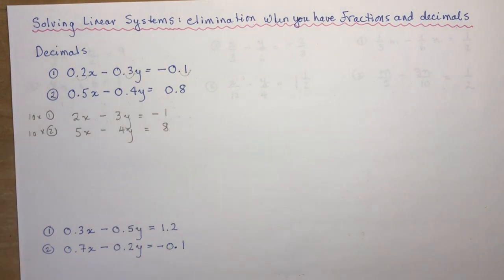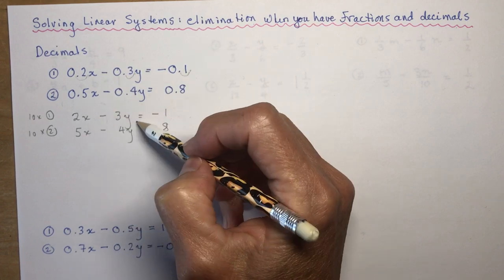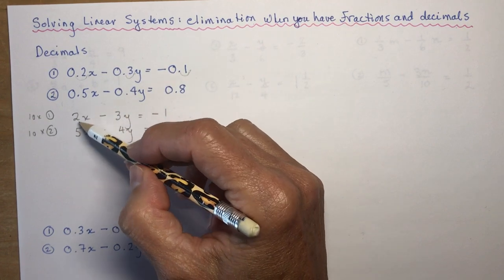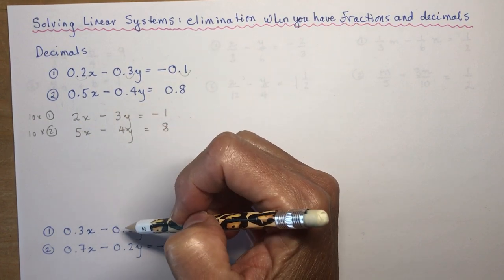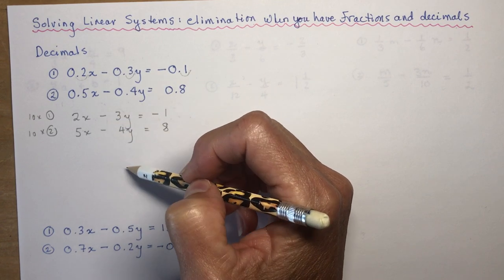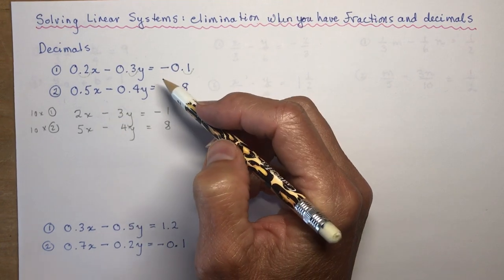Now I have to go through the process from the previous lesson: find a coefficient to match for one of these variables. I can either make both y-coefficients 10 or both 12 — one or the other, not both.